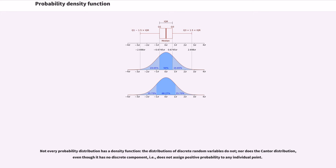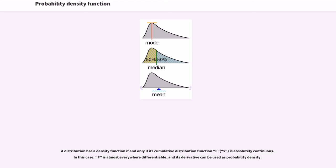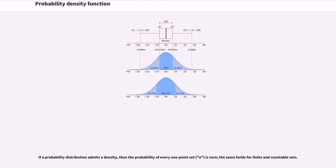Not every probability distribution has a density function. The distributions of discrete random variables do not, nor does the Cantor distribution, even though it has no discrete component — i.e., it does not assign positive probability to any individual point. A distribution has a density function if and only if its cumulative distribution function F is absolutely continuous. In this case, F is almost everywhere differentiable, and its derivative can be used as the probability density. If a probability distribution admits a density, then the probability of every one-point set is 0; the same holds for finite and countable sets.